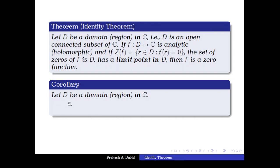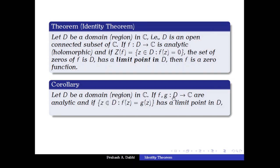We now see the corollary of this theorem. Let D be a domain. If we have two analytic functions f and g on D, and if the set {z in D : f(z) = g(z)} has a limit point in D — meaning the set of points where f and g are equal has a limit point in D — then f(z) = g(z) for all z in D.